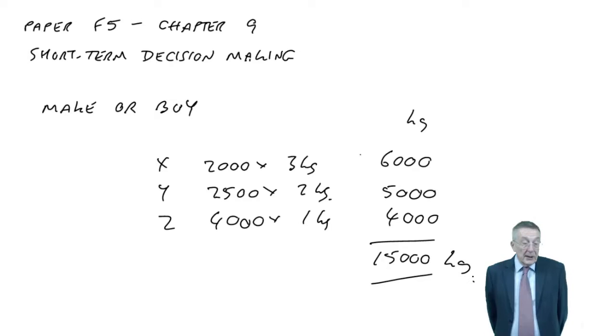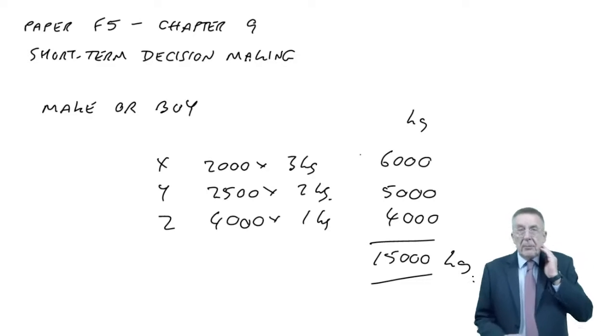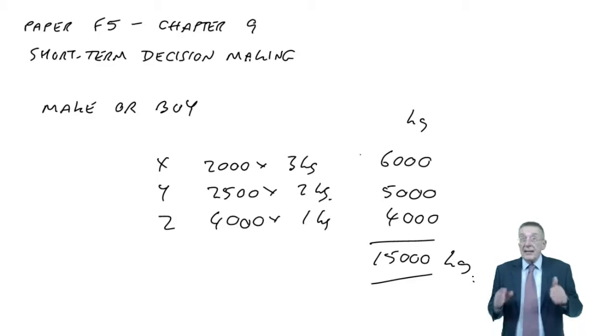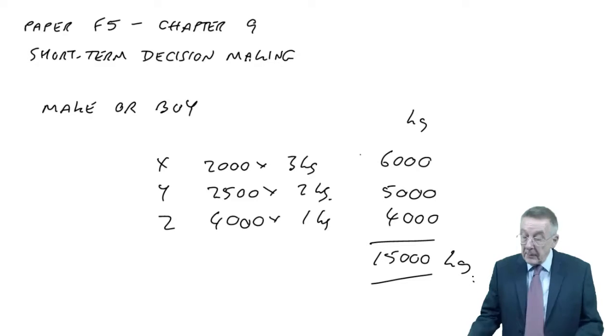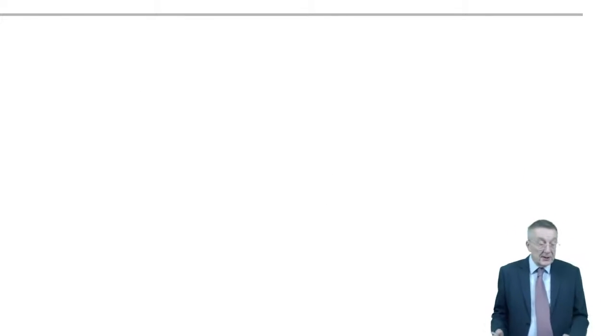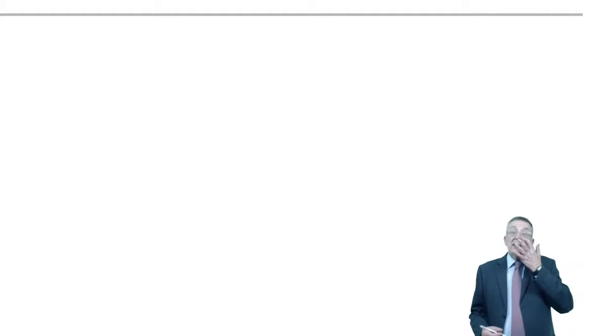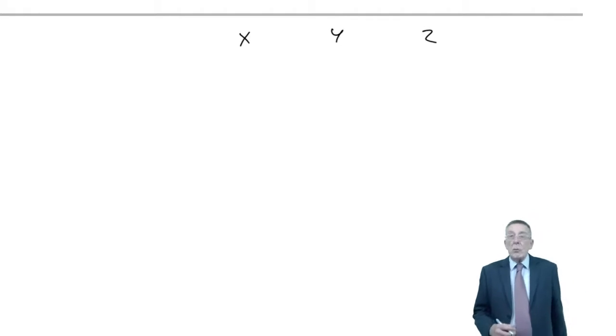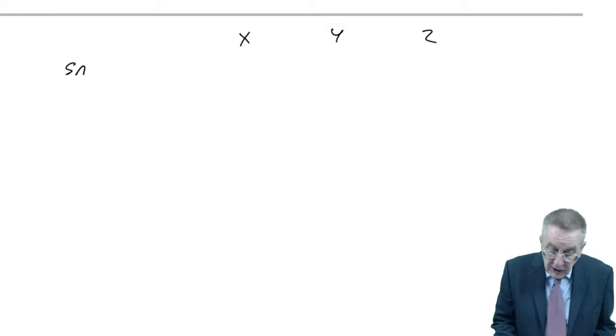We're going to have to buy some of them from outside and pay the extra buy-in price. I'm going to assume that all the products can be sold at a much higher price. Let's assume we can sell them all at $25 a unit. Then we're going to make a profit whether we make it or whether we buy in the units. We'd prefer to make it ourselves to make even more profit because the cost is lower. But we can't make all ourselves, we've not got enough kilos. We've got to decide which should we make ourselves.